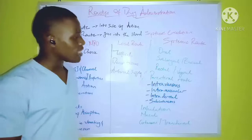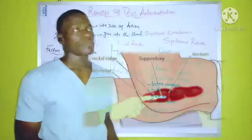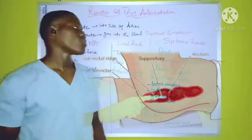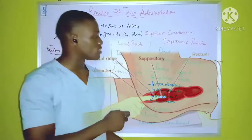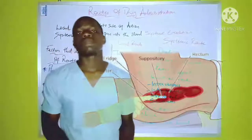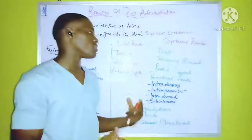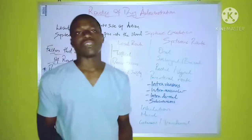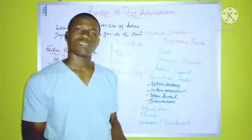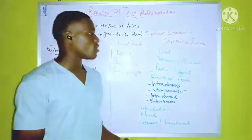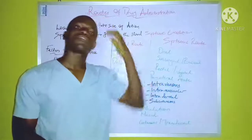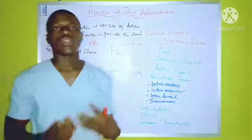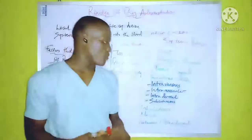The next is the rectal or vaginal route. Drugs administered through the rectum are inserted into the anus, and drugs administered through the vaginal route are inserted into the vagina. Examples of drugs placed into the vagina are mainly contraceptives. When administering drugs through these routes, the patient is advised to remain in bed for about 30 minutes to one hour, and to empty their bowel or bladder before taking the drug.